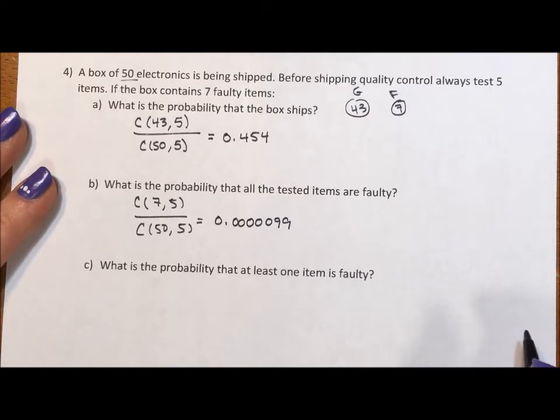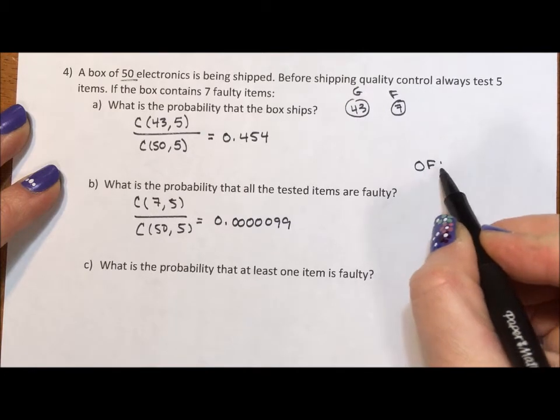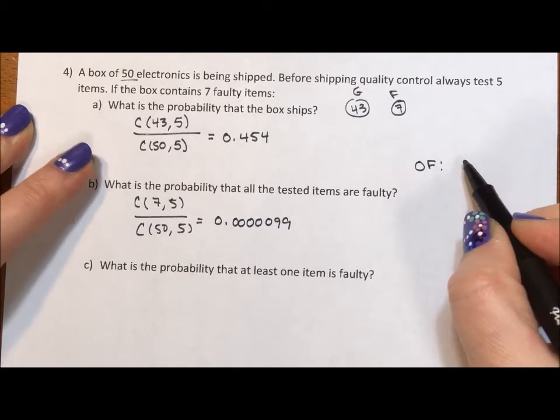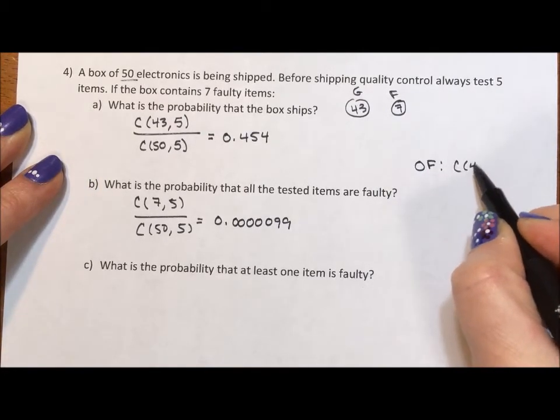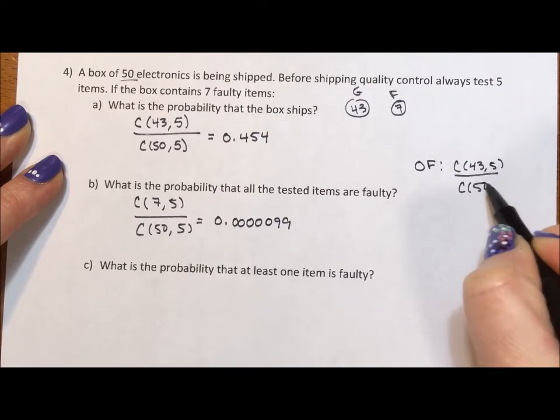Next it says what's the probability that at least one item is faulty. Okay, so when we do this problem, we have a few choices. We could have 0 faulty. And with 0 faulty, that is of course what we first calculated. The combination of the 43 taken five at a time divided by the combination of 50 taken five at a time.